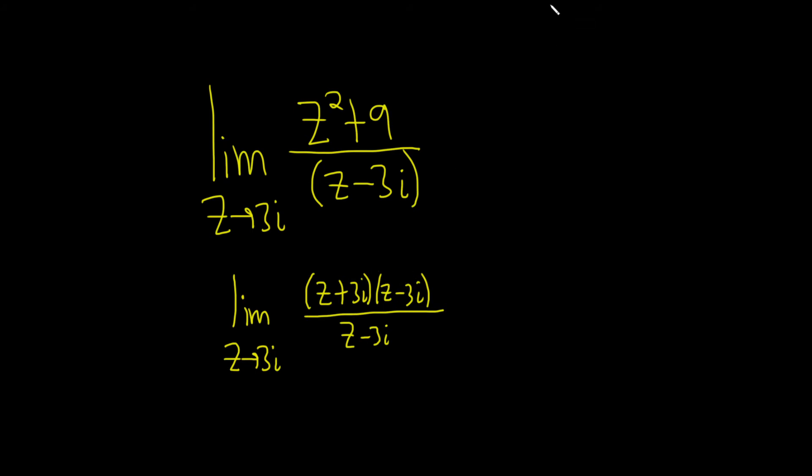If this seems not familiar, recall if you have a plus bi times a minus bi, that's equal to a squared plus b squared. It's a formula we're using here. So here a is z and b is 3, so it works out really nice.